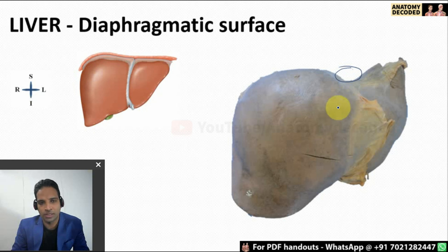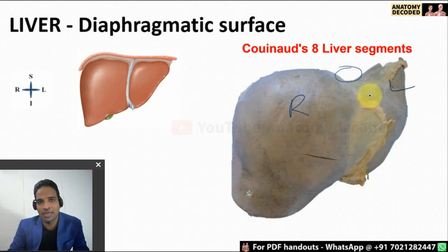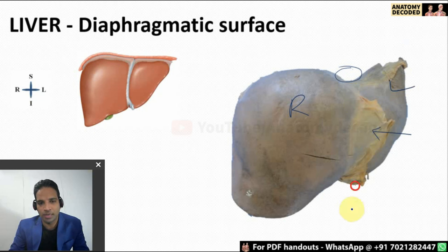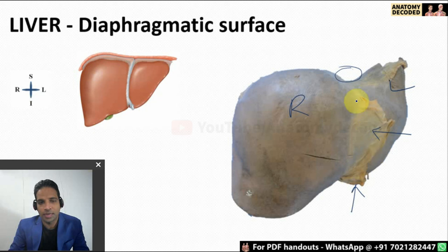The various parts of the liver are the right lobe and the left lobe — these are the anatomical right and left lobes. There are eight surgical or functional segments of the liver as well, known as Couinaud's liver segments. Here we can see the falciform ligament, and there is an anatomical structure in the lower aspect of the falciform ligament referred to as the ligamentum teres hepatis — it is a remnant of the left umbilical vein.